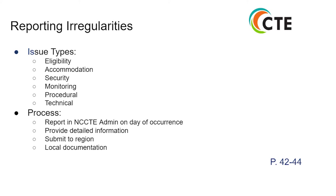Process irregularities can be reported in NC CTE admin on the day of occurrence. You should provide detailed information, submit to the regional coordinator, and make sure to keep local documentation.